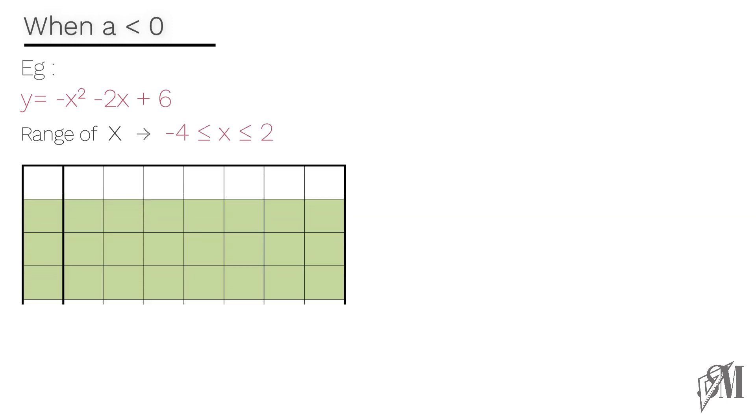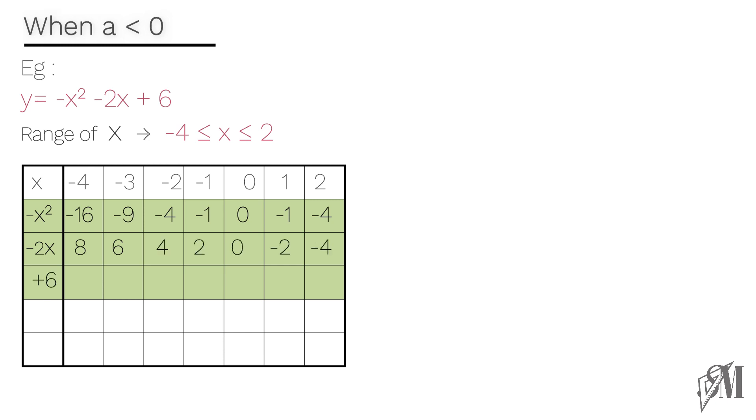Arrange the table with x values from minus 4 to 2. The minus x squared row is filled by taking the negative values of the square of x. That is, if x is equal to minus 4, its square is 16, but since we need minus x squared we take minus 16. The remaining rows are filled just like before. To get minus 2x, multiply x values by minus 2 and add 6 to all the values, then take the summation of the shaded part to get y.